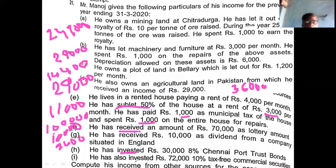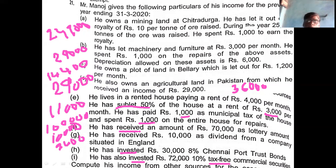Next investment: 72,000 at 10% interest gives 7,200, but it is tax-free so you gross up using 100 by 90. Therefore 72,000 into 10 divided by 90 gives 8,000. If you take the total of all these values, you get the income from other sources.